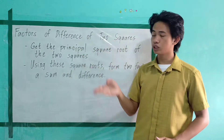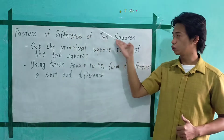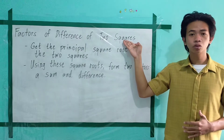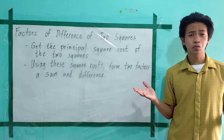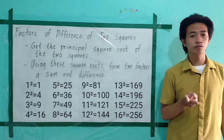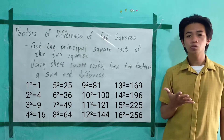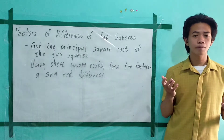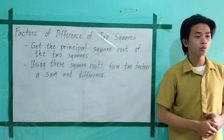Difference of two squares — from the word 'difference,' it is a minus sign, and the 2 is squared, meaning we have two perfect square terms. It is important to know what a perfect square number is. So: 1² = 1, 2² = 4, 3² = 9, 4² = 16, 5² = 25, and so on. It's very important to know the perfect square numbers to speed up our learning of difference of two squares.